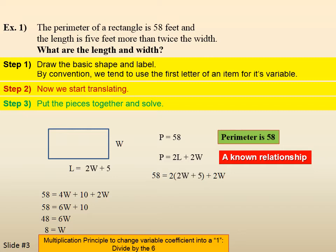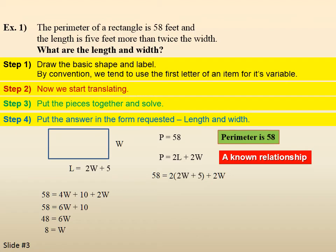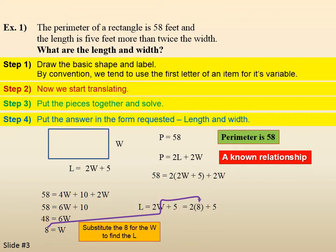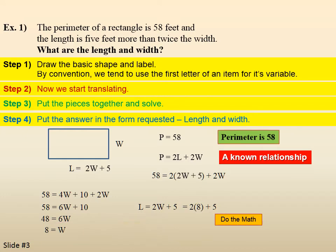But, it didn't ask for just the width. It asked for length and width. So, now we need to answer the final question. Put the answer in the form requested, length and width. We have a little formula for length, which is length equals 2W plus 5. So, we put the 8 in for the W. And, we do the math. So, now we know the length is 21. To answer the question, L equals 21 feet, W equals 8 feet.